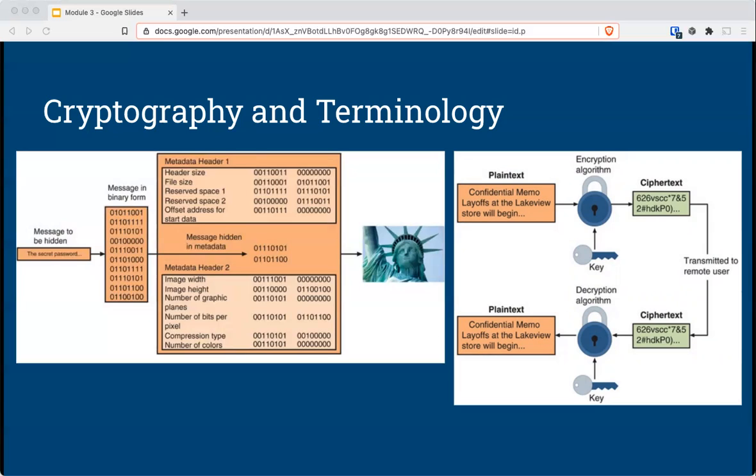The three main terms that go with this are plain text, cipher text, and clear text. Your plain text is the unencrypted input data or the output of a decryption. The cipher text is the scrambled or unreadable output of encryption. And the clear text is the readable or unencrypted data being transmitted or stored.